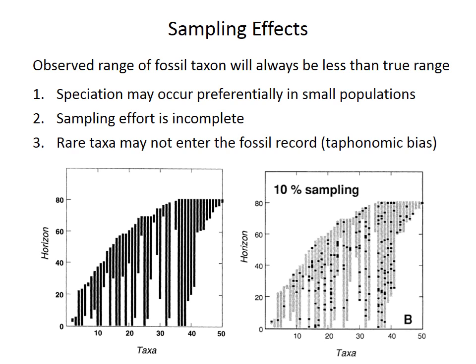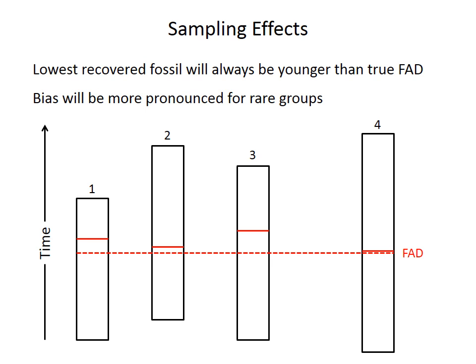Finally, taphonomic losses may also introduce additional gaps, as rare species may not be preserved at all in certain units. Because of these sampling effects, the lowest recovered fossil will always be younger than the true first appearance datum. The bias between the observed occurrence and the true FAD will be larger for rare taxa, which have more and larger gaps in their record, and those rare taxa may also be lost altogether.